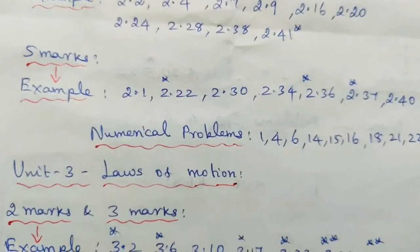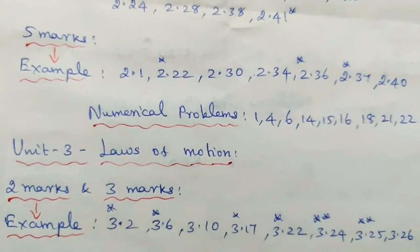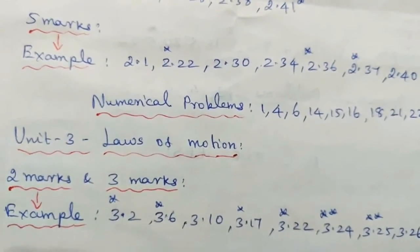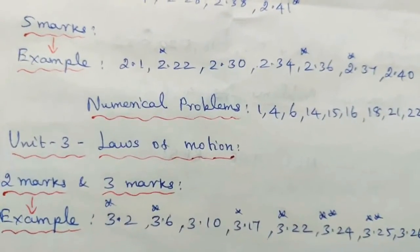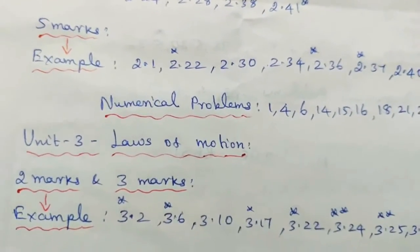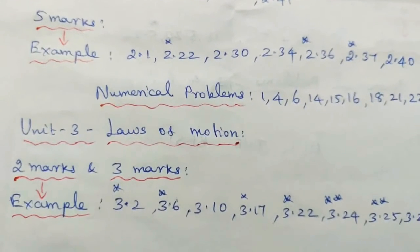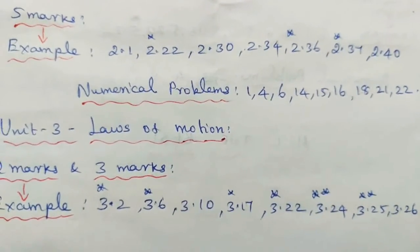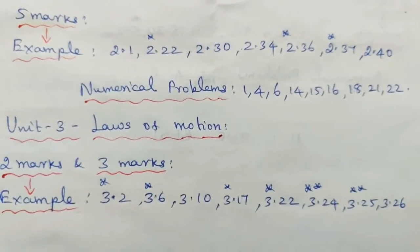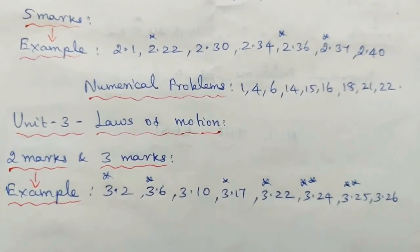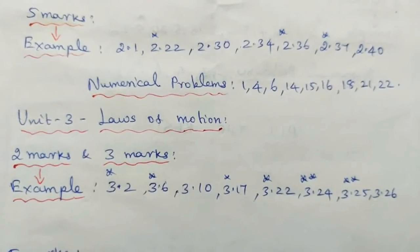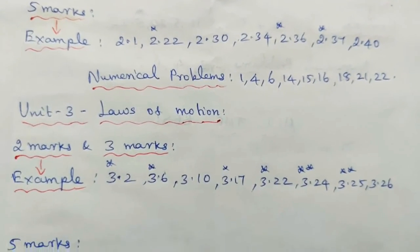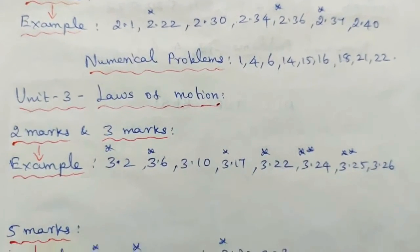Unit 3: Laws of Motion — 2 marks and 3 marks. Example Problems: 3.2, 3.6, 3.10, 3.17, 3.22, 3.24, 3.25, and 3.26.